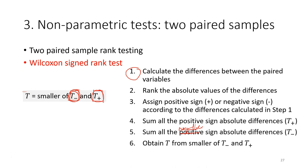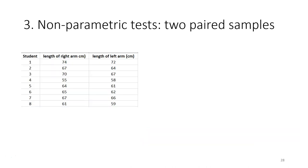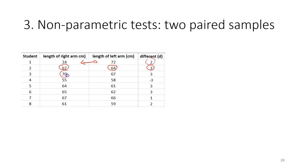Applying this to the data set, we calculate the differences between paired variables. For the first pair: 74 minus 72 is 2. Then 67 minus 64 is 3, 70 minus 67 is 3, 55 minus 58 is negative 3, and so on for the rest of the observations.